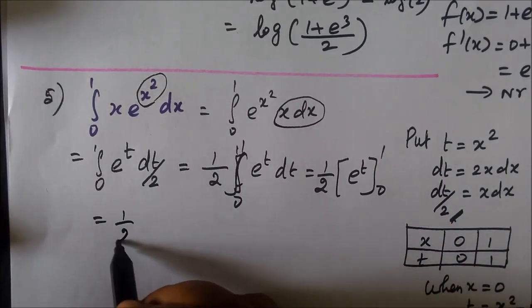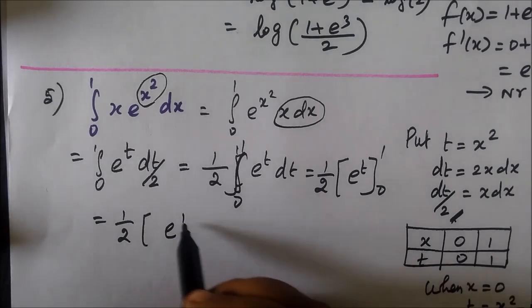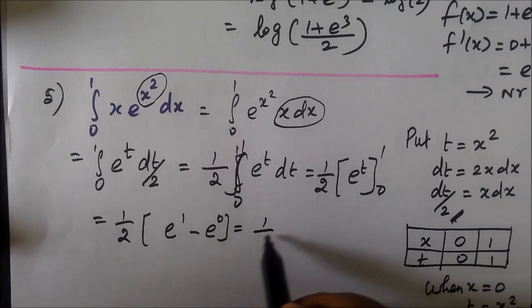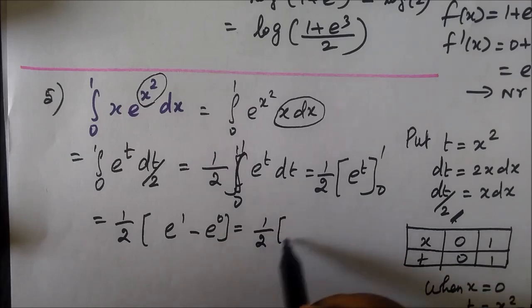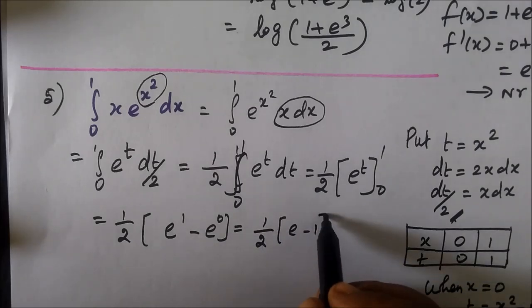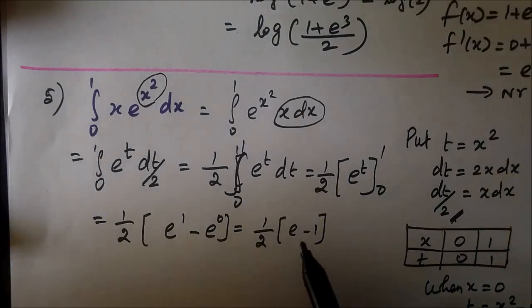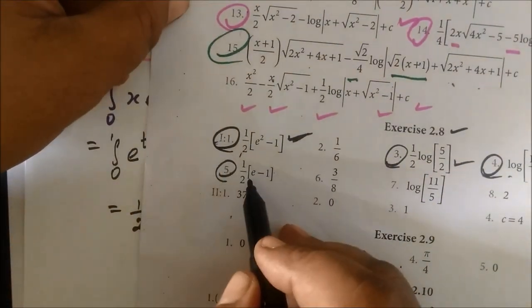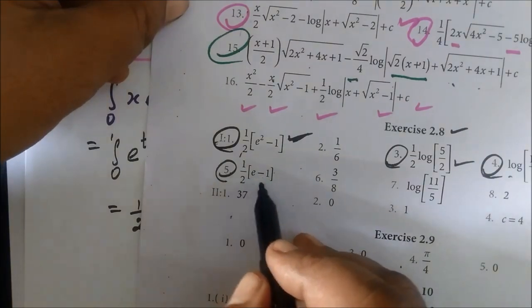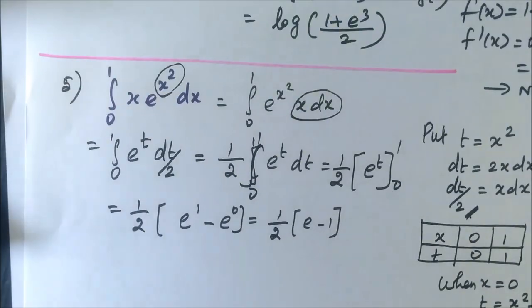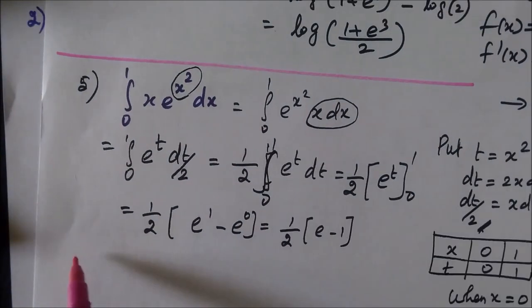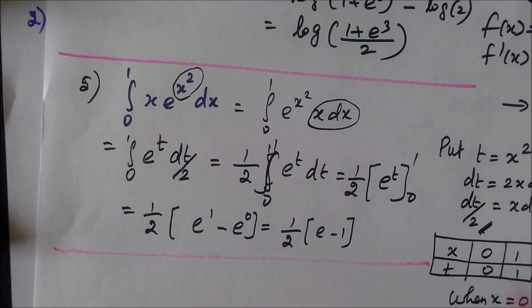So the result is (1/2) times [e^t] from 0 to 1, which equals (1/2)(e^1 minus e^0), giving (1/2)(e minus 1). So the answer is (1/2)(e minus 1). Now we do question number 6.